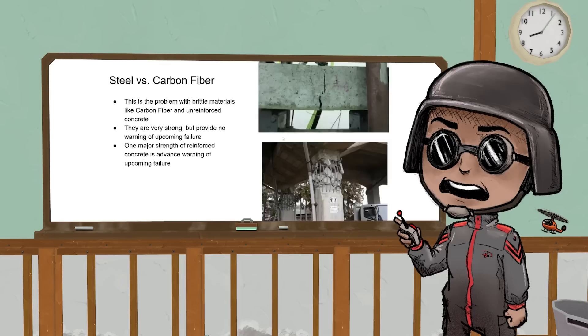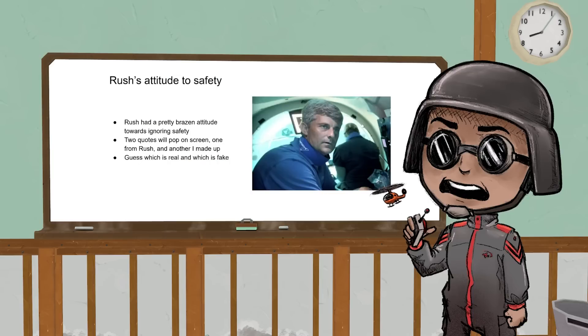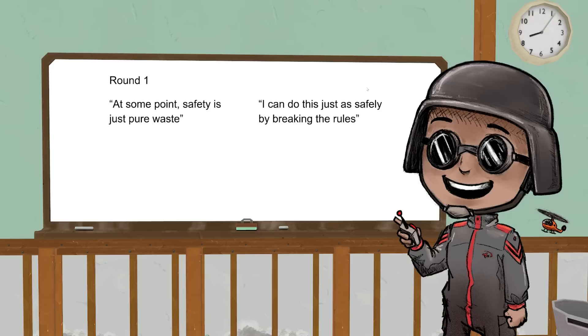Concrete is actually a pretty good example of this. Unreinforced concrete is brittle fracture—everything collapses all at the same time, there's no warning. Rush had a pretty interesting safety attitude, so I've collected a series of quotes, some that I made up and some that are real. I'm going to put them on screen and we'll have you in the audience guess which one is real and which one is fake.